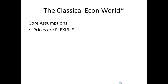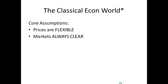The core assumptions of classical economics, at least in this simplified, characterized view, are basically two things. Prices are flexible — prices for all resources, prices for both inputs: land, labor, and capital, and outputs: consumer goods and commodities. Prices adjust quickly to maintain equilibrium in any particular market for any particular good, anywhere, anytime in the economy. And what this means is that markets always clear.